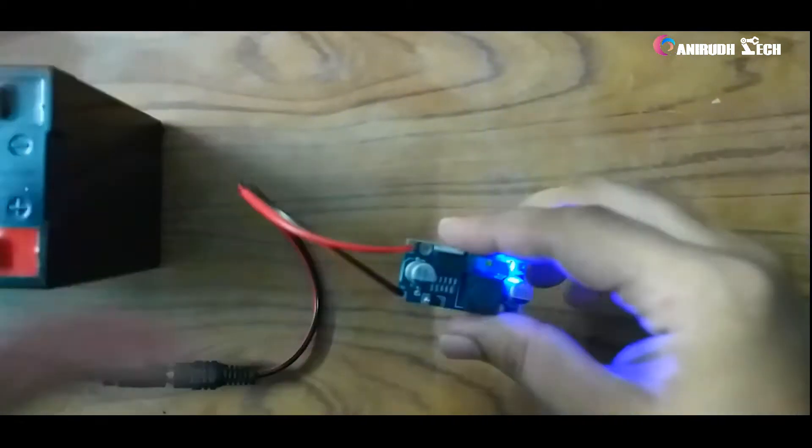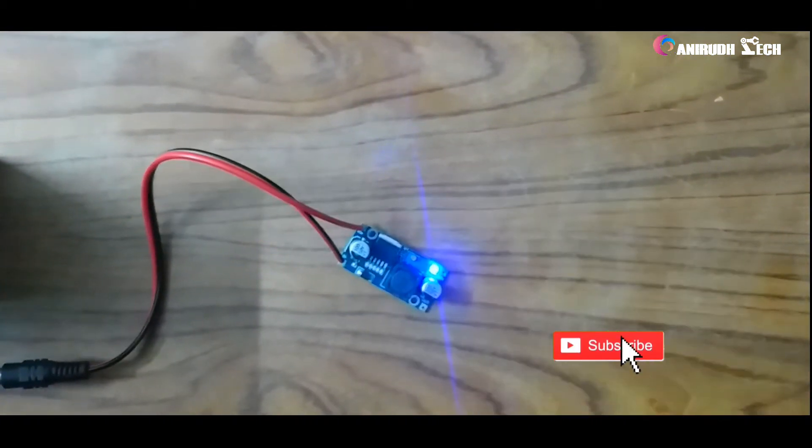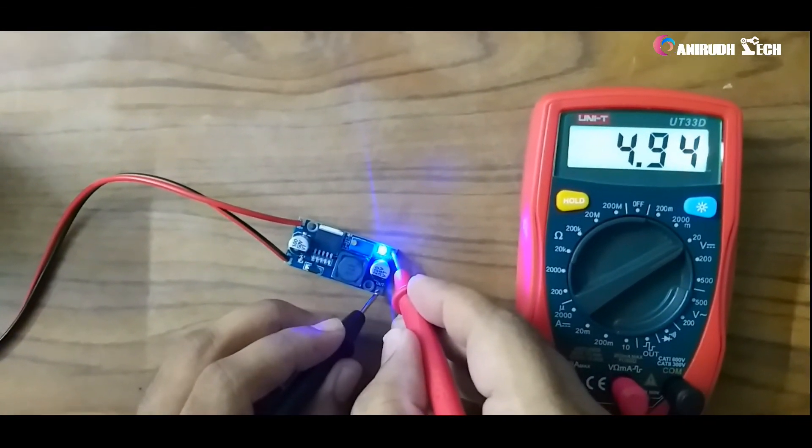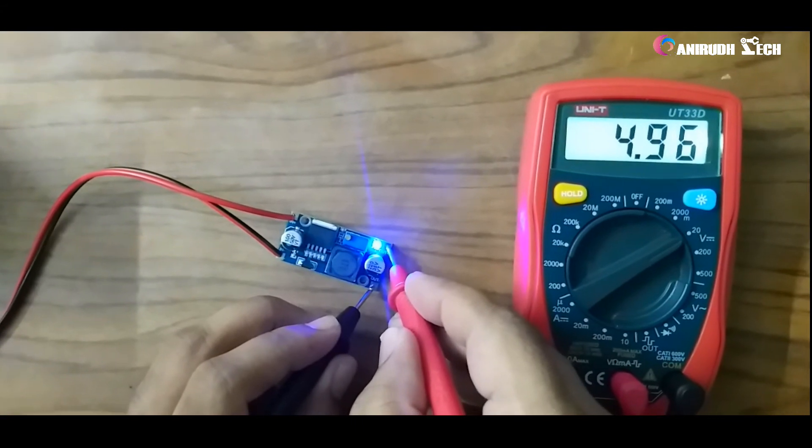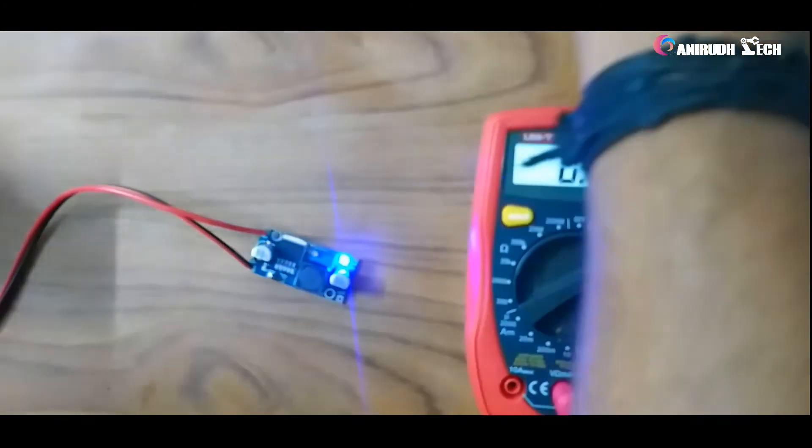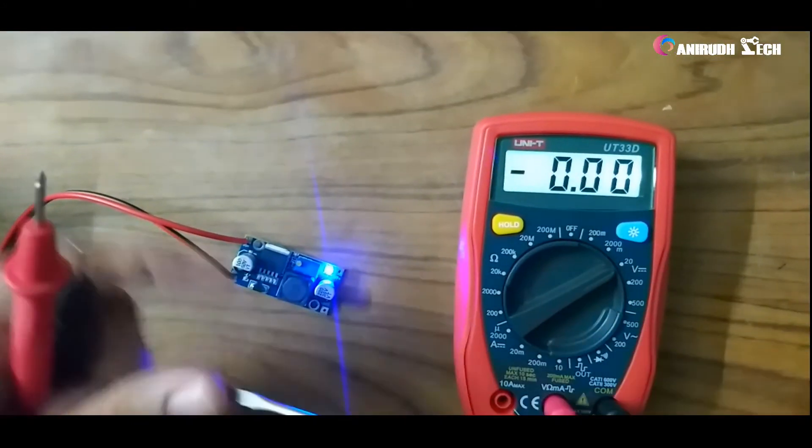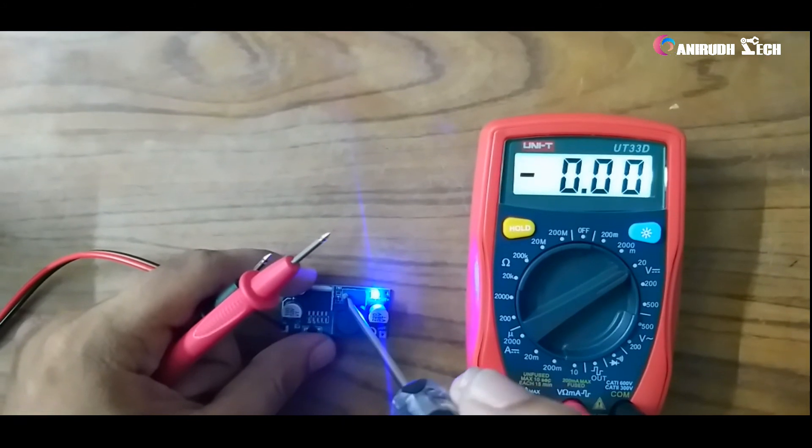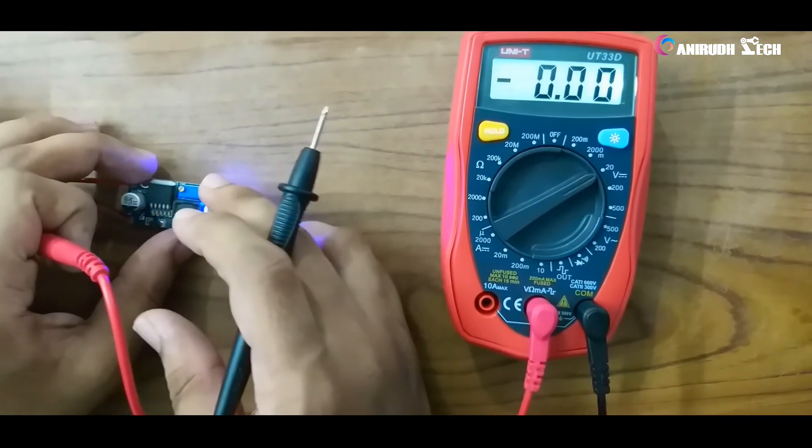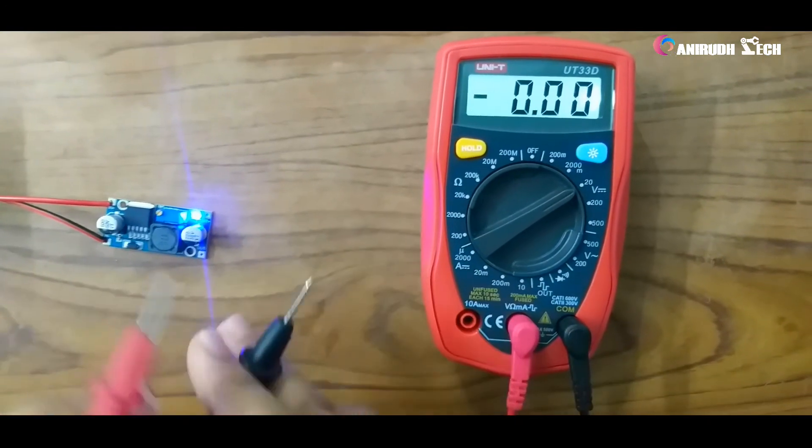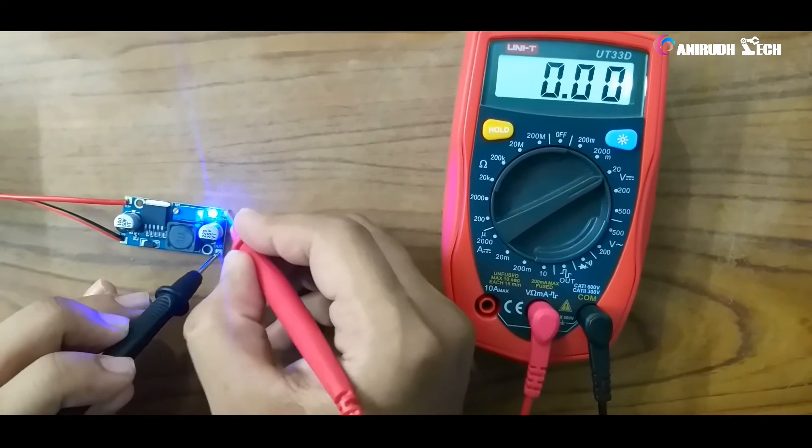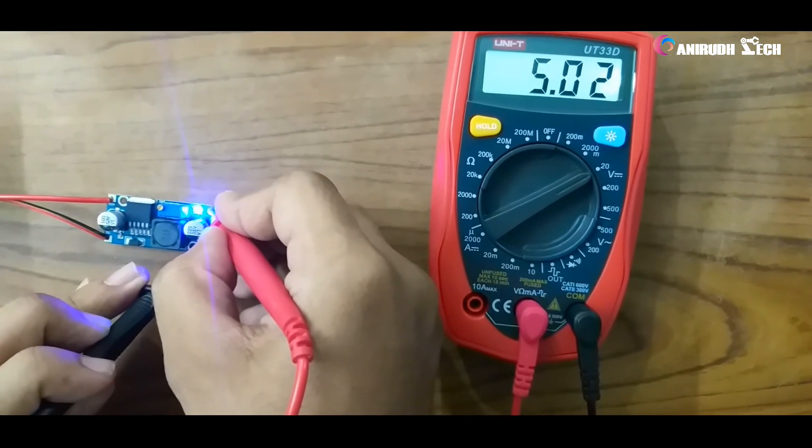Now we can check output voltage. We can see it's 4.95, 96. Now I am changing it using a potentiometer. You can use a minus screwdriver, just changing it. Now I have adjusted the potentiometer to 5 volts DC. You can check it, you can see it's 5.2 volts.